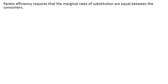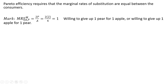Pareto efficiency requires that the marginal rates of substitution are equal between the two consumers. Evaluating Mark's MRS: Mark has four apples and two pears, so plugging those values in, we get a value of one. This means Mark is willing to give up one pear for one apple, or one apple for one pear, holding utility constant.